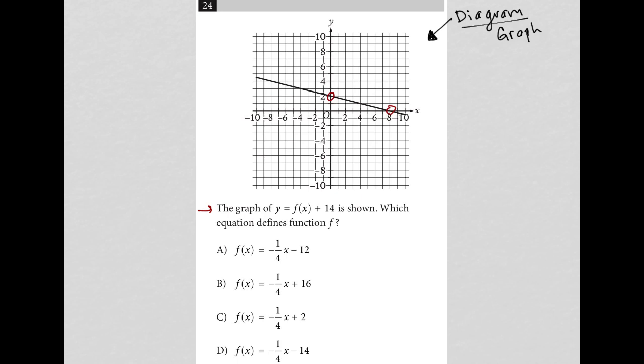This graph is not the one to match with the answer choices. The graph provided for us is f(x) + 14. So f(x) is a whole separate graph, which is what we're trying to find as an answer choice. We know that this plus 14 has been added to it.